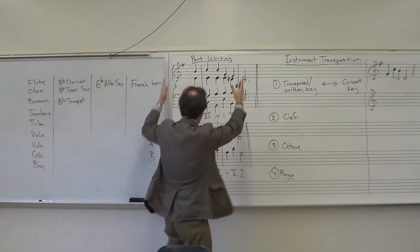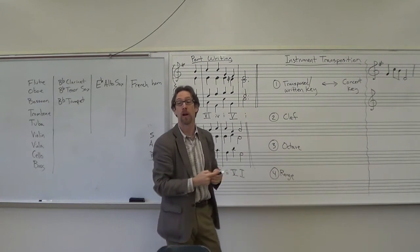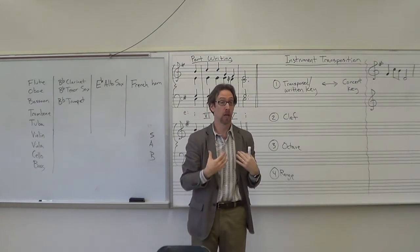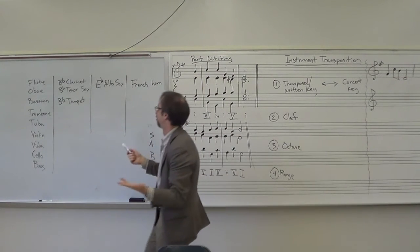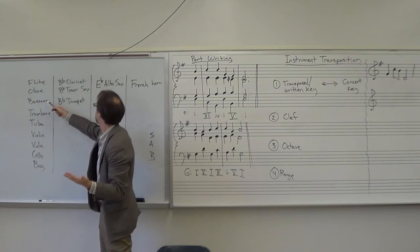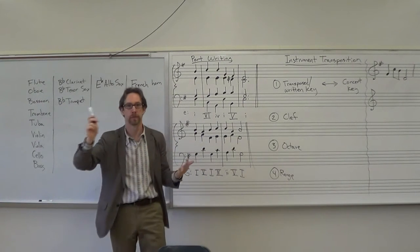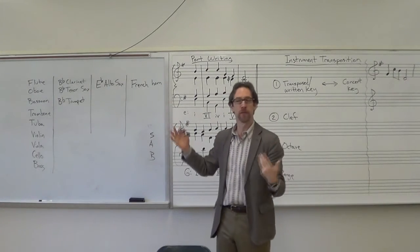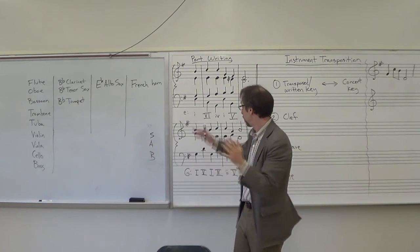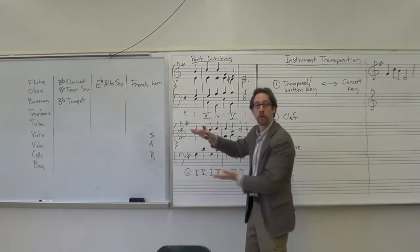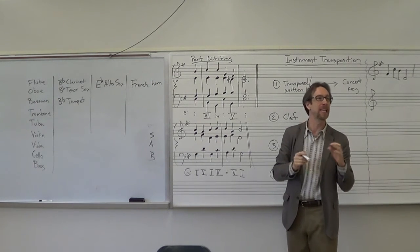One of the skills that we want, now that we know how to part write, we are now in a position where if someone says to us, could you make an arrangement of this piece for bassoon, B-flat trumpet, E-flat alto sax, and a French horn? We can say, yeah, we can write some four-part harmony for those instruments, but now we need to know, we can do it this way, but how do we write it for those individual instruments? Not all of those instruments are in the same key.